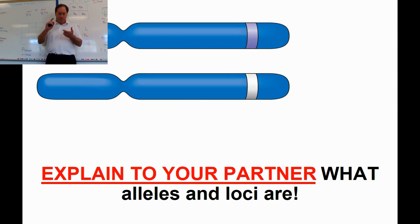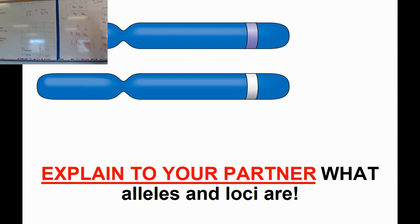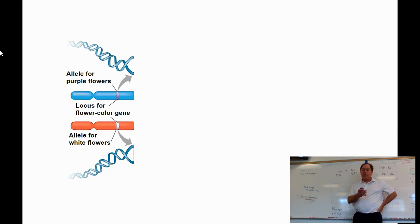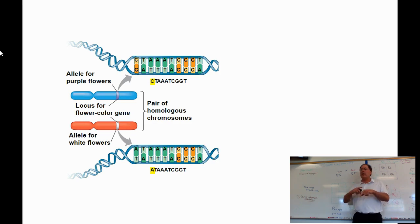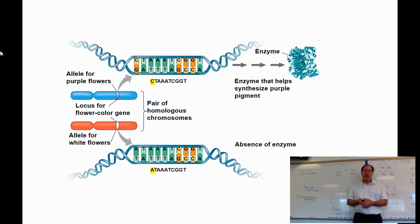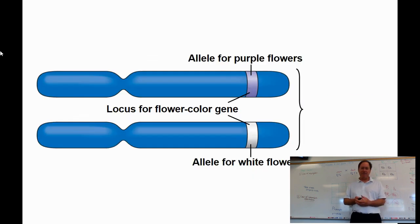I like this picture from your textbook — it blows up and helps kids understand the bigger picture. You can see the two chromosomes with two different alleles for flower color. When you look at a chromosome, you're looking at all this wound-up DNA, and the two different forms of the gene for flower color have slightly different spellings on their nucleotides, which then create different proteins and ultimately different flower colors.